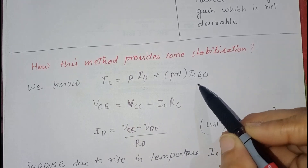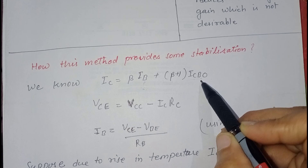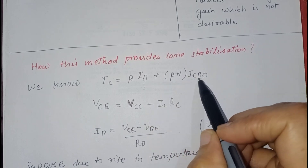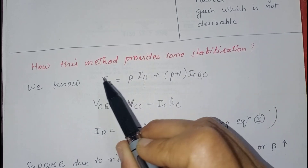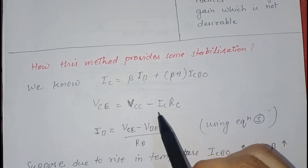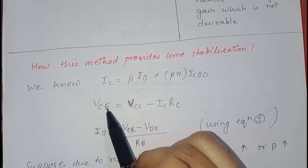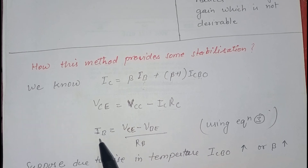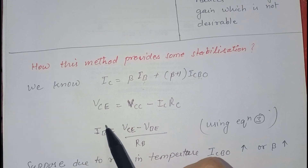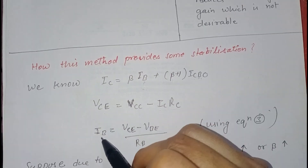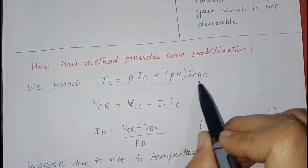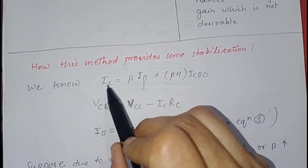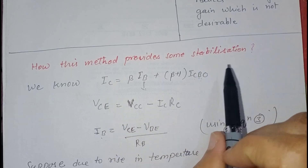To see how stabilization is achieved: suppose due to an increase in temperature, ICBO (leakage current) increases, or due to transistor replacement, β increases — this causes IC to increase. As IC increases, the voltage drop IC·RL increases, which reduces VCE. Since VCE is directly proportional to IB, IB also decreases. This decrease in IB counteracts the increase in IC, keeping IC almost constant. This is how stabilization is achieved in this method.